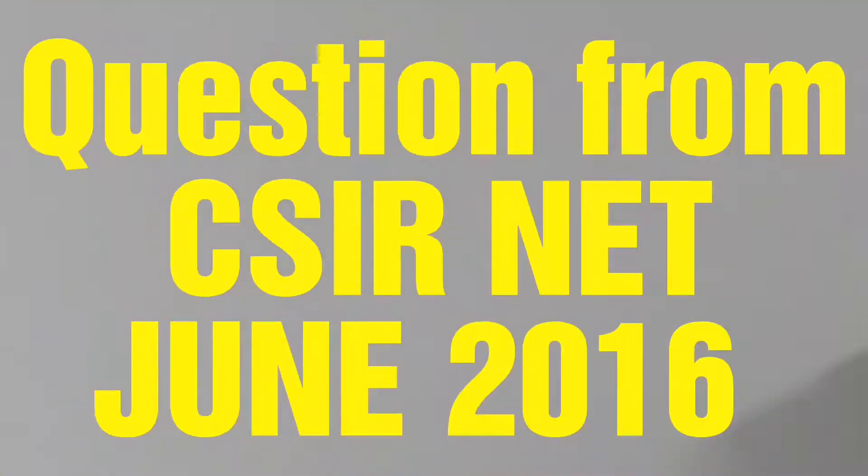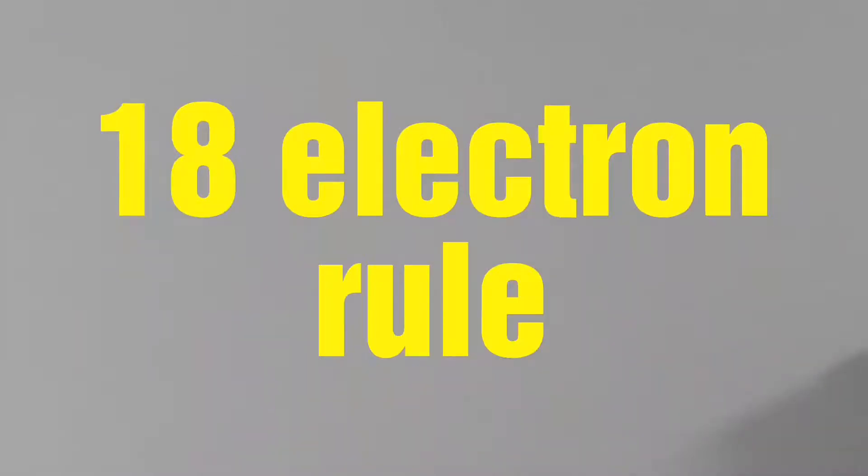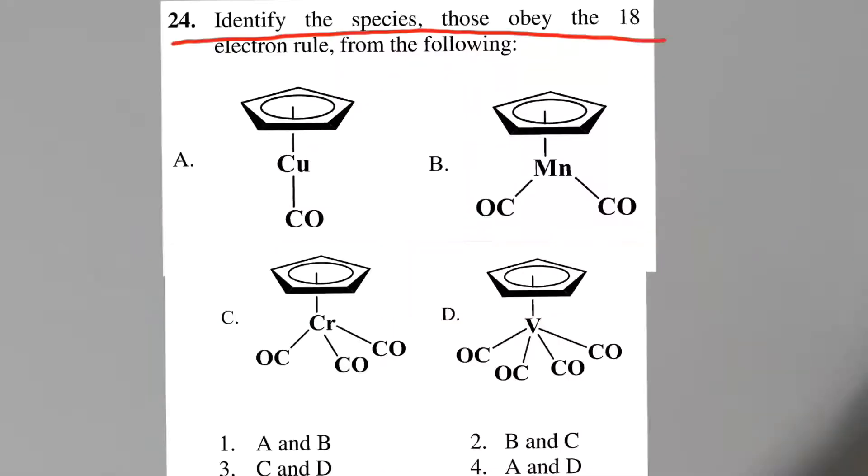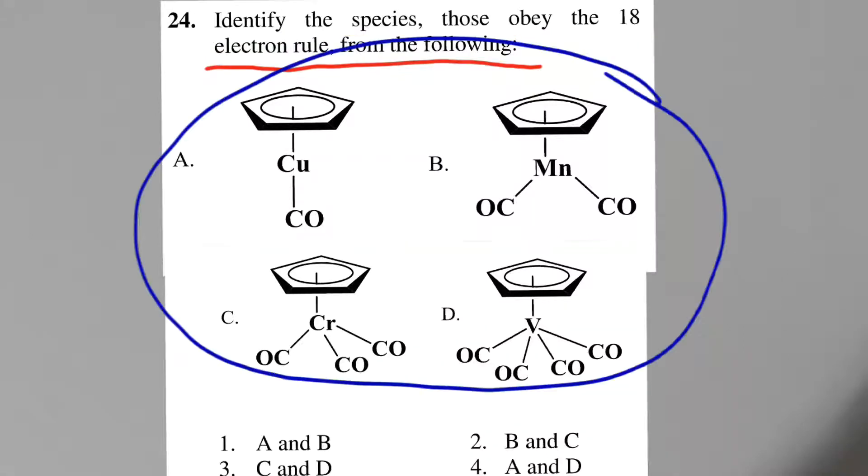Hello friends, in this video we will solve a question from CSIR NET June 2016 based on 18 electron rule. Identify the species, those who obey the 18 electron rule from the following.